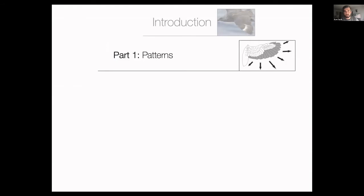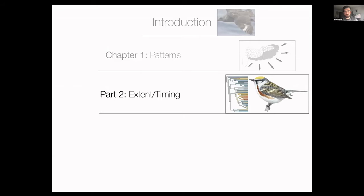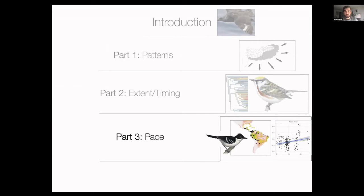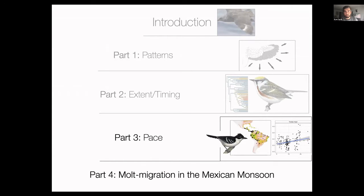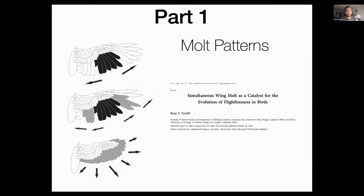My research during my PhD and ongoing has one main goal: to find an evolutionary perspective for molt and put the patterns we see in molt in birds into an evolutionary context. My approach is to study interactions between birds' phenotype, life history, ecology, and their molt strategies. This breaks up into four parts — three dissertation chapters and one current postdoc project. The first part has to do with patterns of molt: extent and timing of molt, pace, and then molt migration.